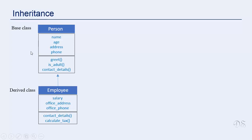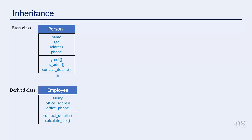This existing class is called the base class and the new class is called the derived class. When you inherit from a class, everything from that class becomes automatically available in the derived class. So here, there was no need to copy everything from the person class to the employee class. Due to inheritance, this employee class has access to everything from the person class, and this class can have variables and methods of its own also.